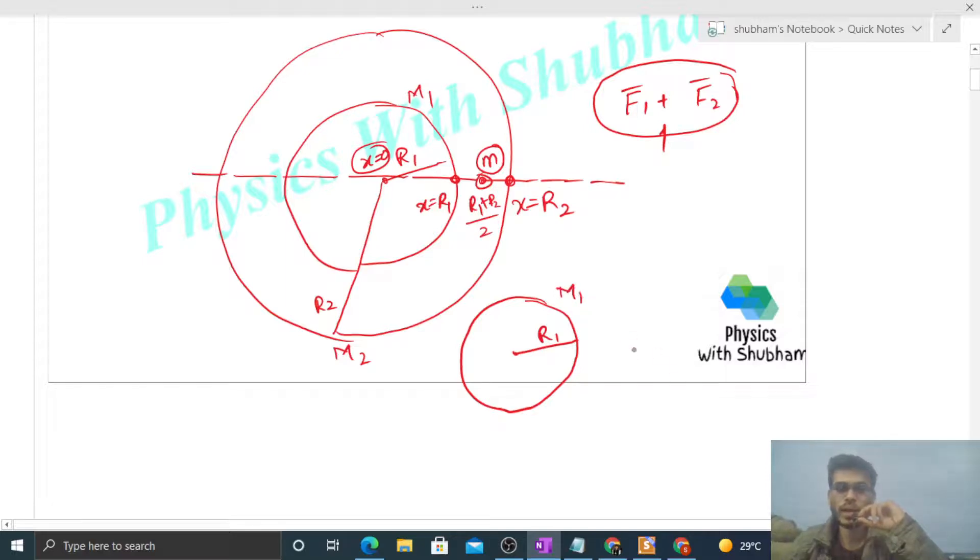At a distance (R1 + R2)/2 from the center, there's a particle of mass small m. This particle is outside this shell, so F1 will be capital G times M1 times m divided by [(R1 + R2)/2] squared.